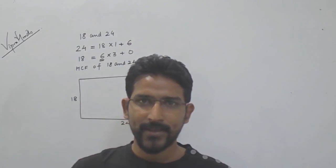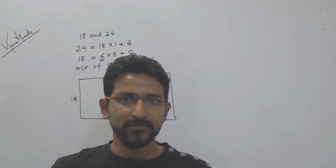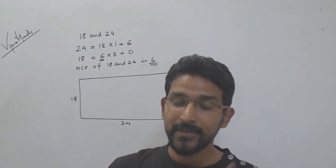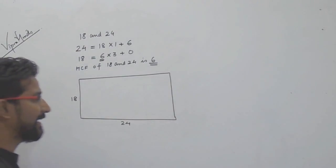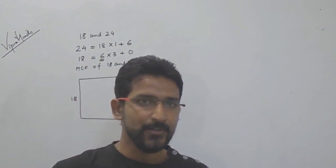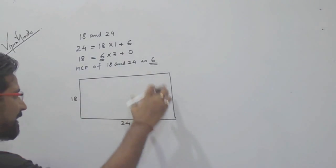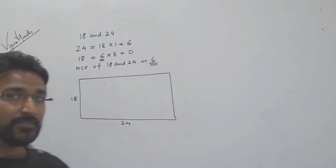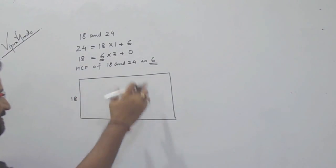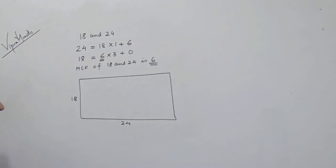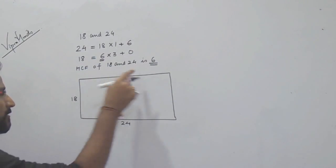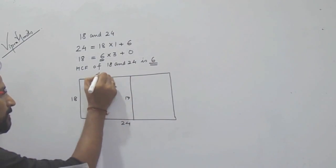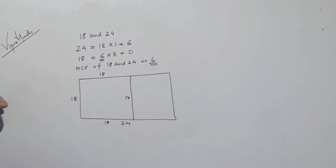So if you cut out squares of side 6 — that is, 6 by 6 — they will all be the same size and there will be no leftover part from this cake. I will explain this geometrically. This is a rectangle. The largest possible square you can cut out first is 18 by 18, so this is 18 by 18 — the largest possible square.